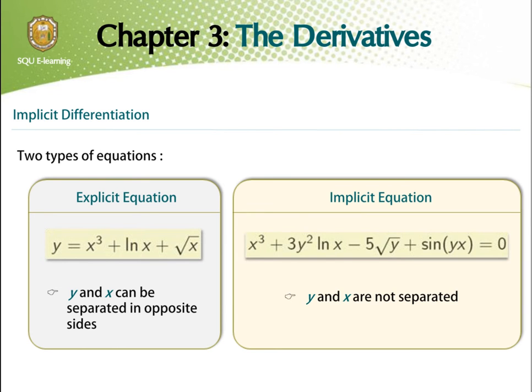Now, the other way around is when the two variables, x and y, are not separated in either side of the equations. An example of this is the following equation: x cubed plus 3y squared ln of x minus 5 square root of y plus sine of the product y times x is equal to 0. Here, the left-hand side of the equation has a mixed expression between x and y.